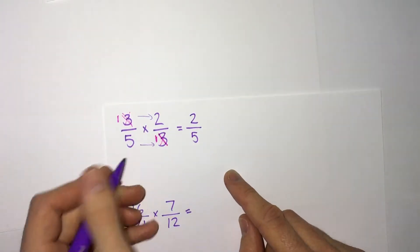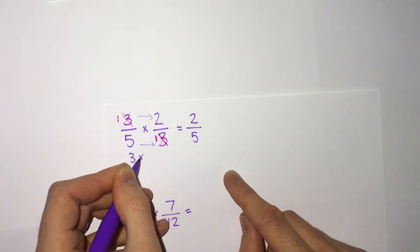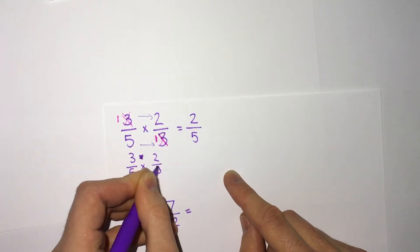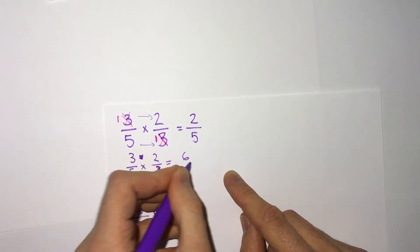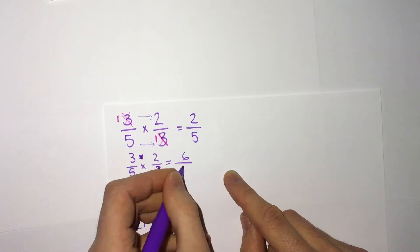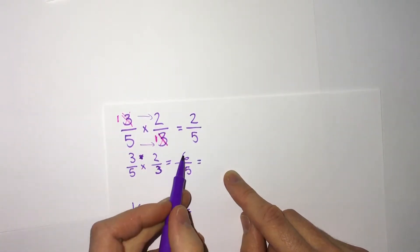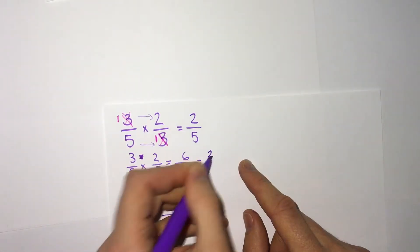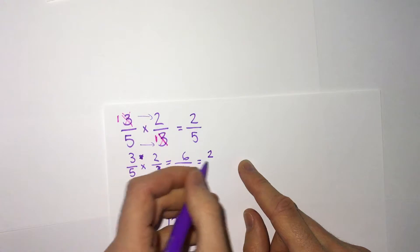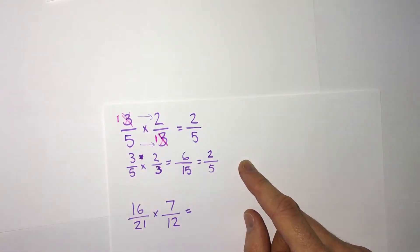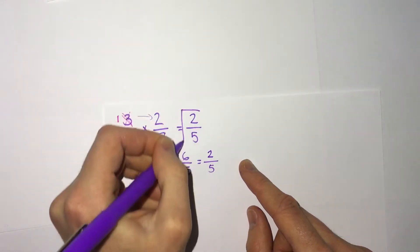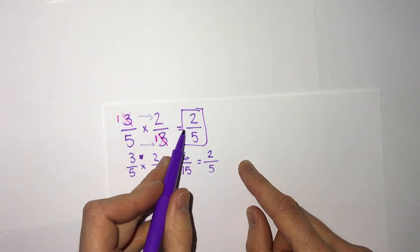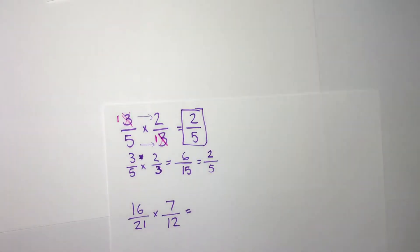Just to confirm it gives the same answer: if we had done 3 fifths times 2 thirds without simplifying first, that would have been 6 over 15. Then we would have had to reduce — 3 goes into both 6 and 15, giving us 2 and 5 — and we get the same answer, 2 fifths. The nice thing is when we simplify beforehand, it's easier simplifying, easier multiplying, and then you already have a simplified answer.